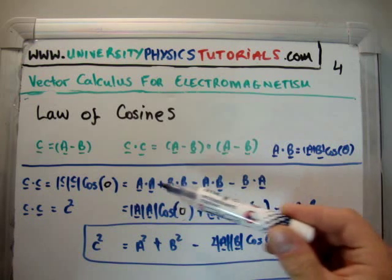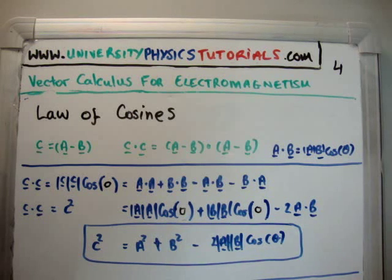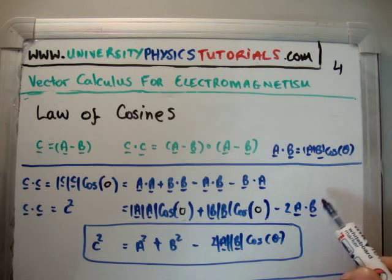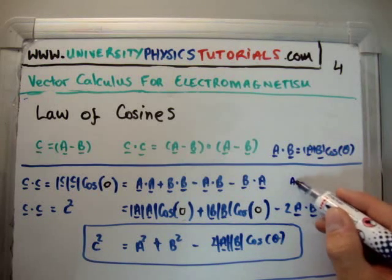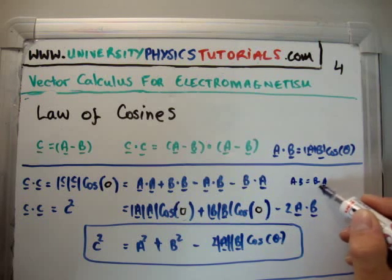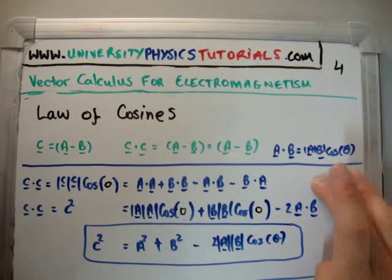Similarly, A dot A is going to be magnitude of A multiplied by the magnitude of A times cos zero, and you're going to get minus 2 A dot B because A dot B equals B dot A - it is commutative in that respect.